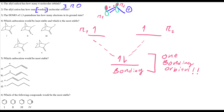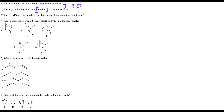Carbon 3 didn't contribute because it has no electrons — all its electrons are used for carbon-hydrogen and carbon-carbon bonds. Carbon 1 and 2 had a lone pair that became the double bond, each donating one electron to the bonding platform. Together they made one bonding pi molecular orbital. So for question 2, there is one bonding pi molecular orbital.